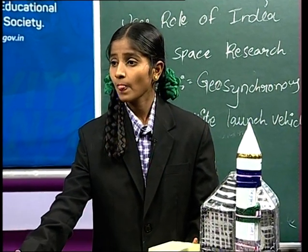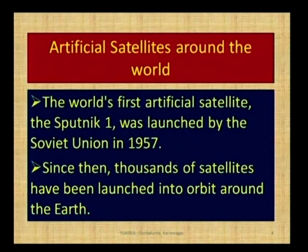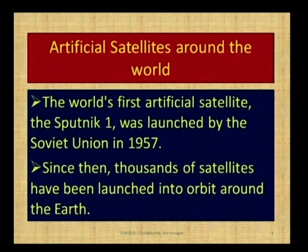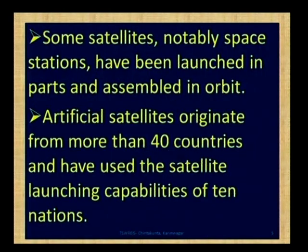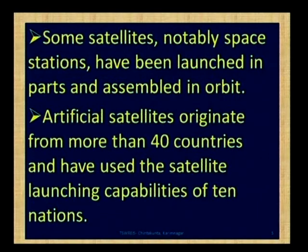Let us discuss about artificial satellites around the world. The world's first satellite is Sputnik 1. It was launched by the Soviet Union in the year 1957. After the launching of Sputnik 1, many thousands of satellites have been launched into orbit around the Earth. Some satellites, notably space stations, have been launched in parts and assembled in orbit. Artificial satellites originate from more than 40 countries.